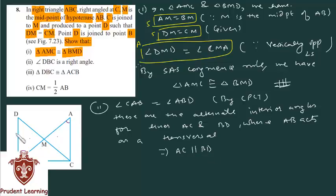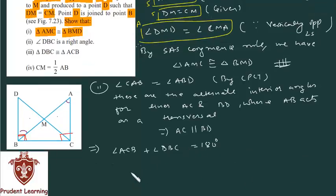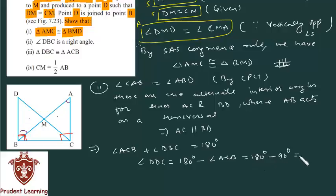Since AC and BD are parallel, this angle plus this angle equals 180 degrees — they are co-interior angles. Angle ACB is equal to 90 degrees since the right angle is at C. Therefore 180 minus 90 is 90 degrees. So angle DBC is 90 degrees, which means it is a right angle. The second part has also been proved.